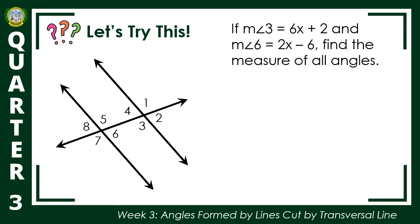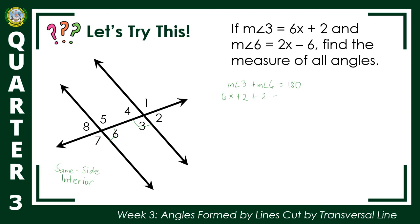Let's mark angle 3 and angle 6 on the figure. What is the relationship between the two angles? As you can see, they are same side interior angles. According to the theorem, same side interior angles are always supplementary. So, the measure of angle 3 plus the measure of angle 6 is equal to 180 degrees.